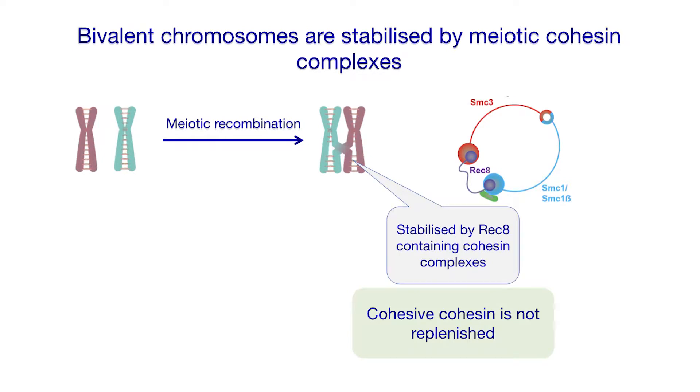So this structure has to remain intact for decades, and it's stabilized by cohesin. This is a meiotic cohesin complex. Once the DNA is replicated, this cohesin ring clamps around and holds the sister chromatids together. Amazingly, work in the mouse indicates that the fraction of cohesin that confers cohesion is loaded on in the pre-meiotic S phase. If that's the same in humans, then this protein complex has to continue to do its job from fetal life right until the egg is ovulated.